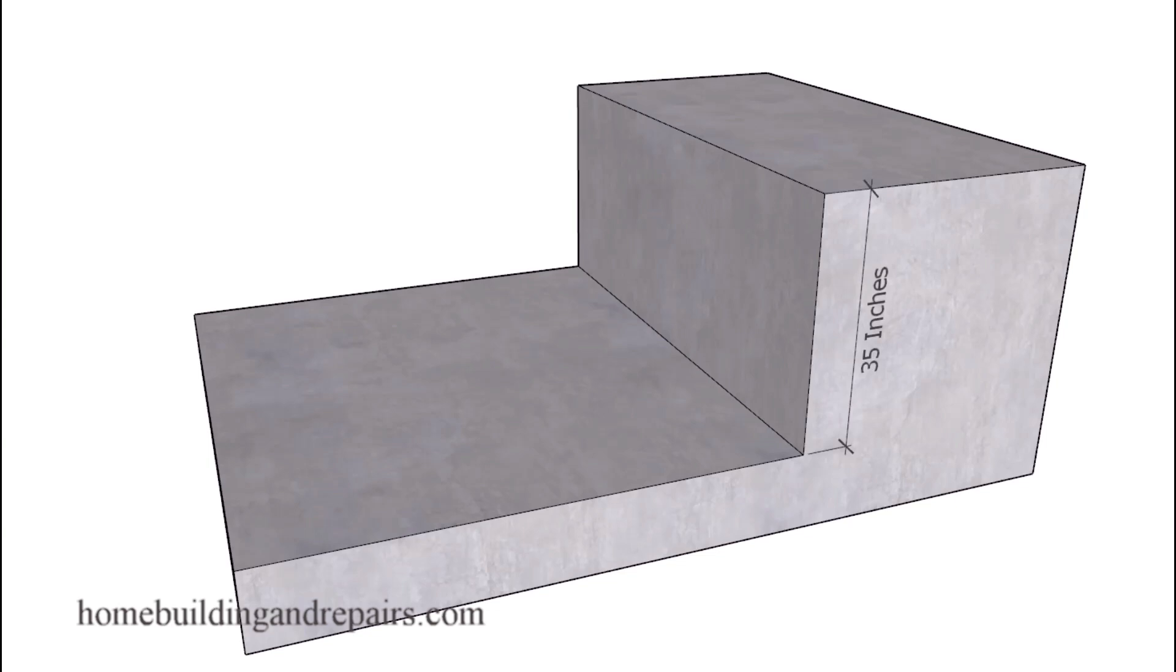In this video I will provide you with the formula you're going to need to calculate the individual riser heights for your stairway. In this example here we have 35 inches between the lower level and the upper level, or the overall total rise of the stairway.